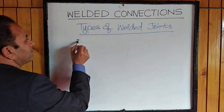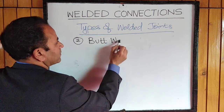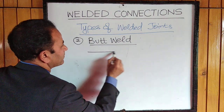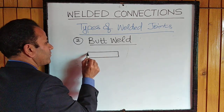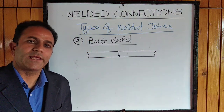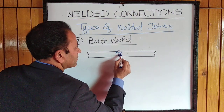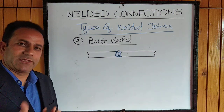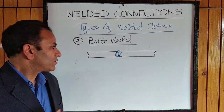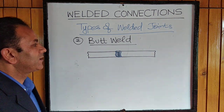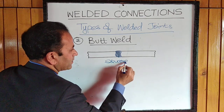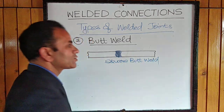The second type is a butt weld. Here the members are not overlapped; instead they are kept face to face with a certain gap in between, and welding is done at the edges. If the edges are not chamfered and welding is done directly, this is known as a square butt weld.